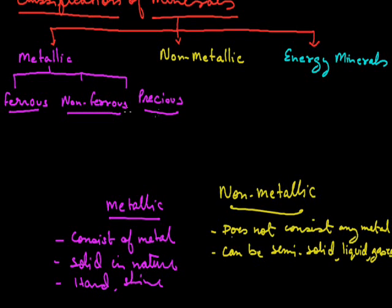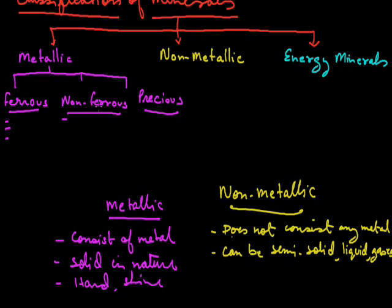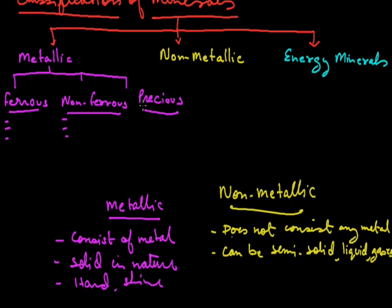Metallic minerals are further divided into ferrous and non-ferrous. Ferrous minerals are those which consist of iron — they are malleable and ductile and have iron content. Examples are iron ore, manganese, and chromite. Non-ferrous minerals do not consist of iron — they are non-malleable and non-ductile. Examples are copper, zinc, salt, and bauxite. Precious minerals form the third part, with examples like gold, silver, and platinum.